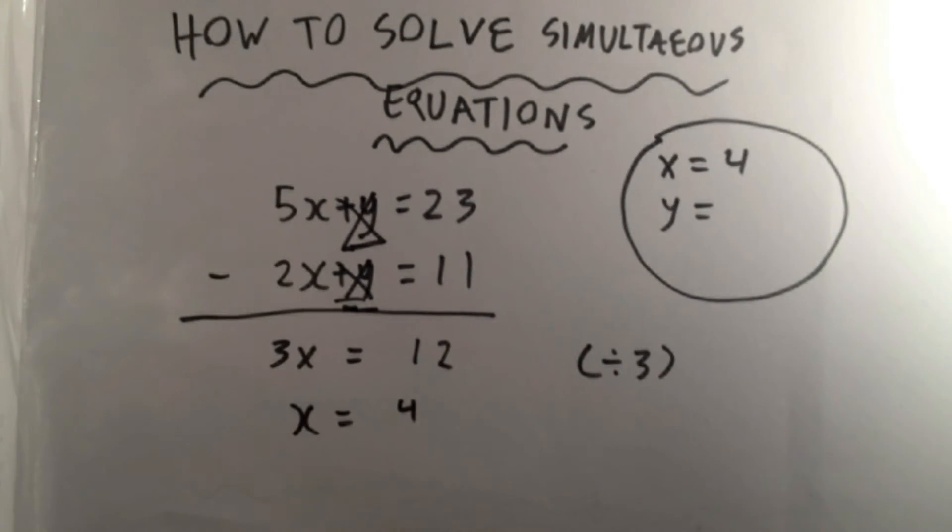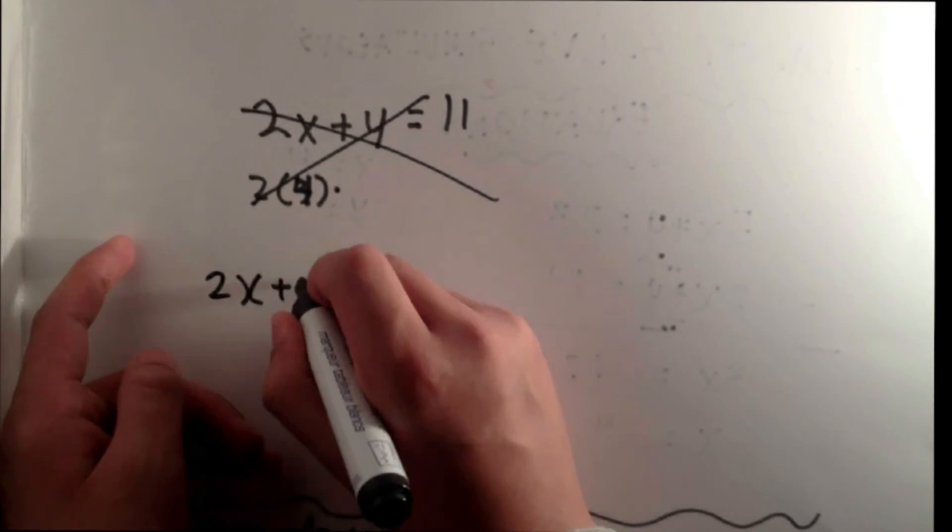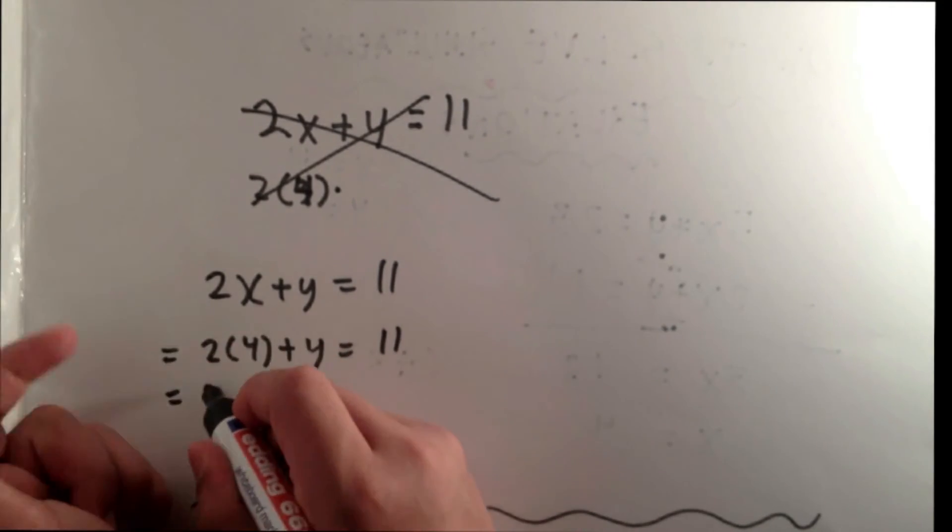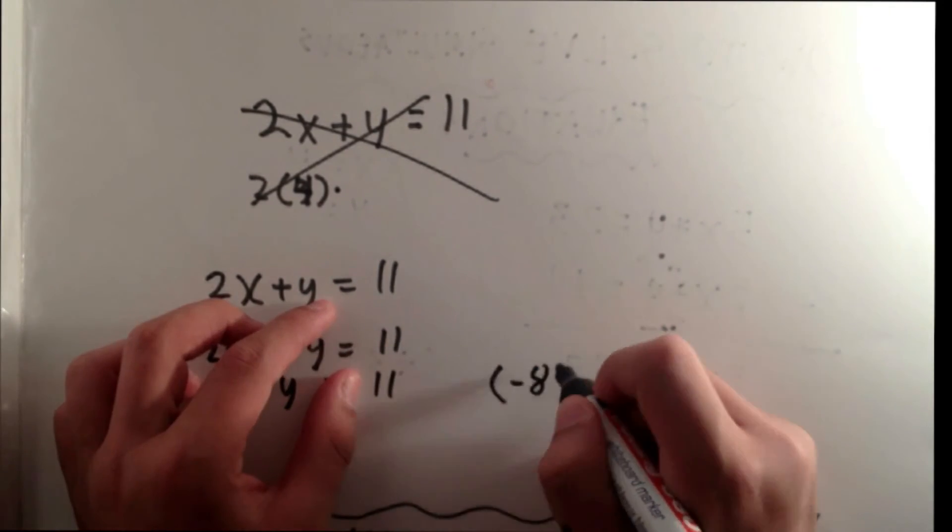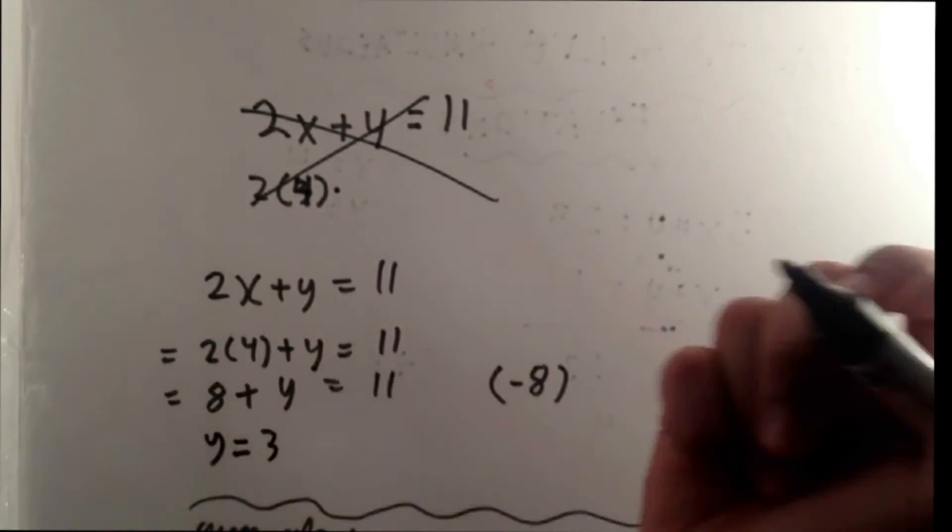Now to find out the y, we have to substitute the 4 into another equation. So 2x plus y equals 11. Therefore 2 times 4 plus y equals 11. 8 plus y equals 11. When we subtract 8, we find out that y equals 3.